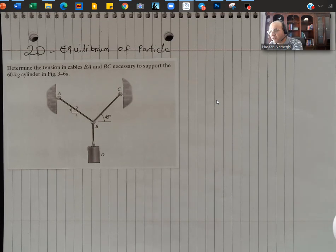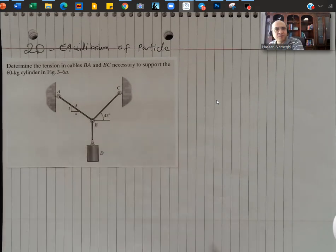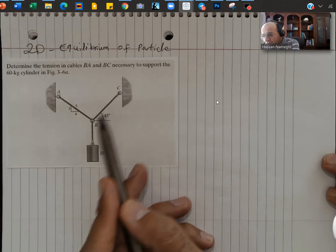Now in this case, if you look into point B, you can see point B is in equilibrium and there are two cables: cable BC and cable BA.